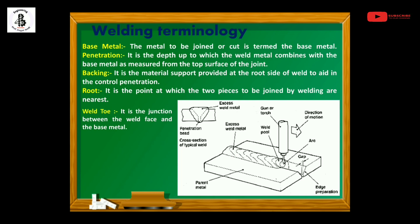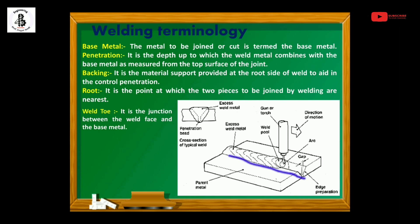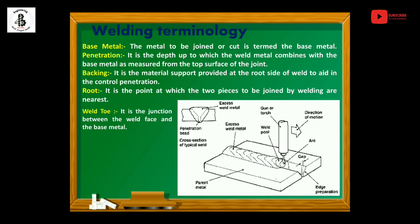Next is weld toe. Weld toe is the junction between the weld face and the base metal. It essentially separates out the boundary of your weld face and the base metal.